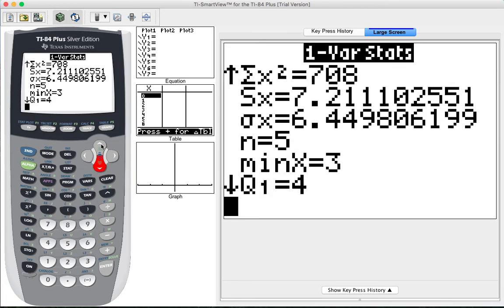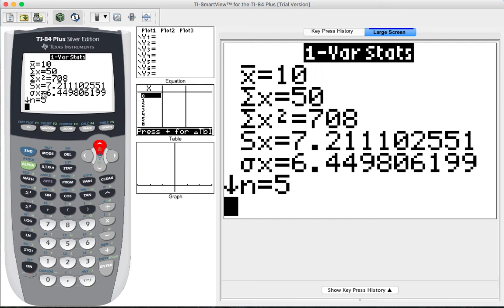We have a lot of output on this screen and it does go further if you press the arrow down. We are most concerned with this portion right here. SX is the calculator's notation for the sample standard deviation. It is 7.2111. The sample standard deviation is 7.2111 when rounded to four decimal places. The population standard deviation is symbolized on the calculator with a sigma and an X. The population standard deviation here is 6.4498 when rounded to four decimal places.